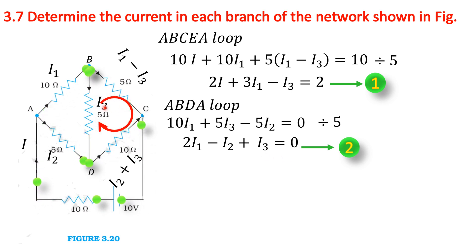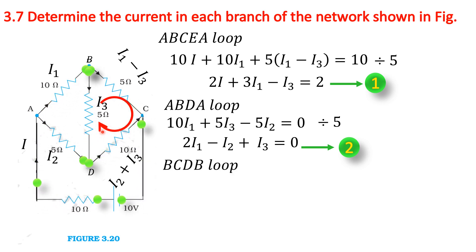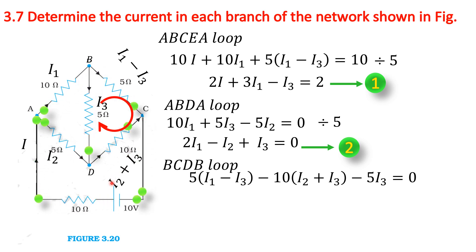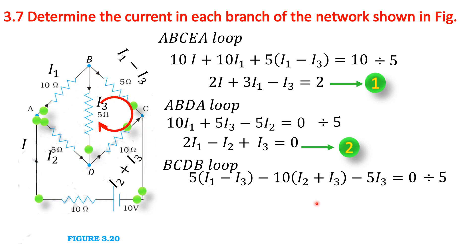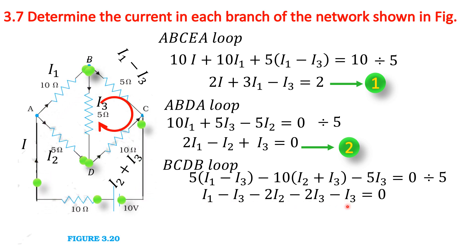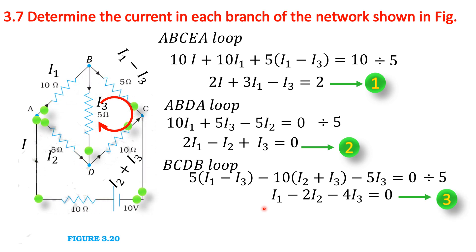Next, we consider the B-C-D loop. Only one resistor has its loop and current direction opposite. The equation is 5(I1 minus I3) minus 10(I2 plus I3) minus 5I3 equals 0. Dividing by 5 and expanding: I1 minus I3 minus 2I2 minus 2I3 minus I3 equals 0, which simplifies to I1 minus 2I2 minus 4I3 equals 0. This is Equation 3.